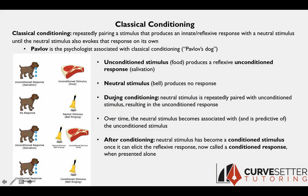During conditioning, the neutral stimulus is repeatedly paired with the unconditioned stimulus. Specifically, the neutral stimulus is presented just before the unconditioned stimulus. With Pavlov's dog, the bell is rung and then the dog is presented with its steak. During conditioning, the steak still triggers salivation, but over time the neutral stimulus becomes associated with and predictive of the presentation of the unconditioned stimulus — the dog learns that when the bell is present, food is also going to be present.